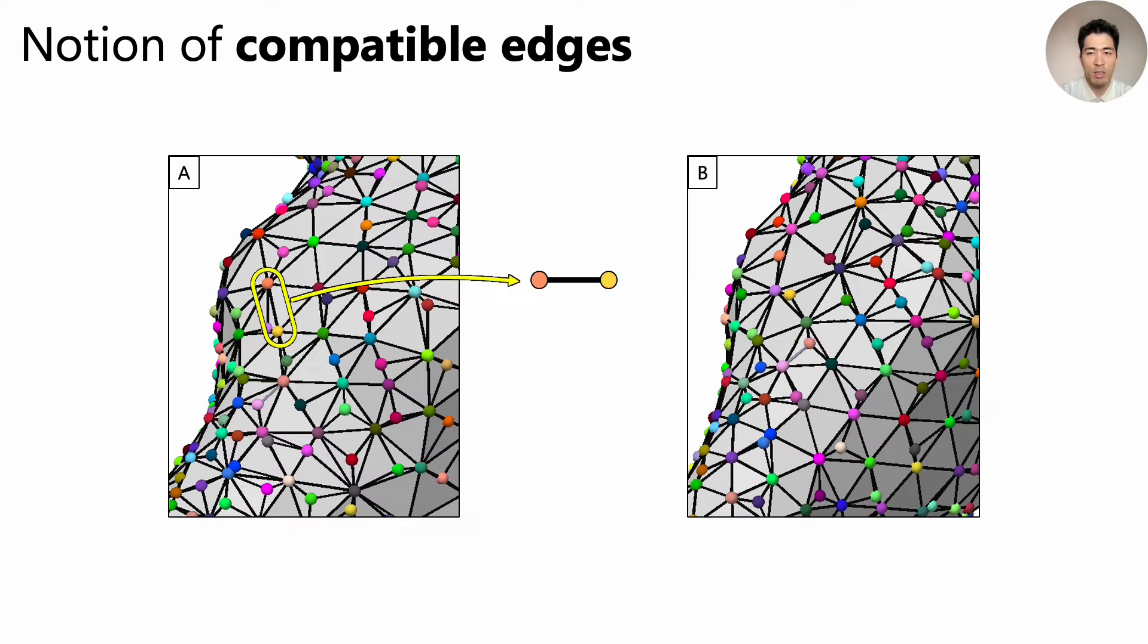Okay, now let's look at this edge. If we look for the same pair of vertices in B, we see that there is no edge connecting them. So we call this edge incompatible, and show it in black.